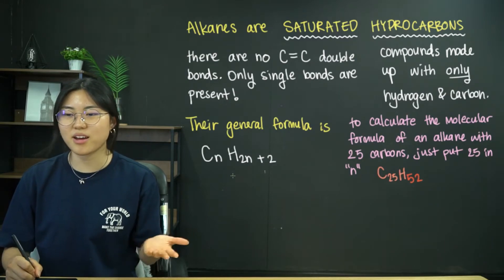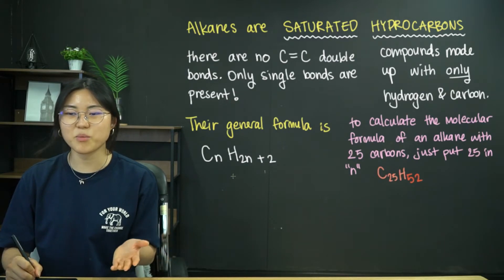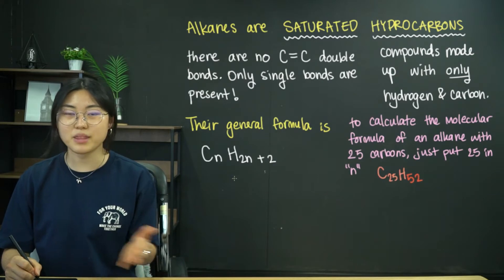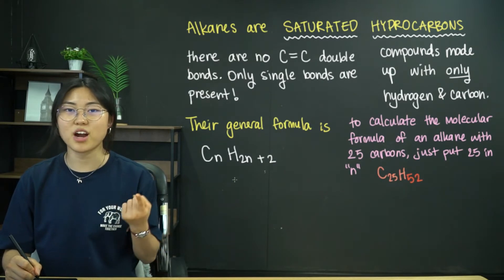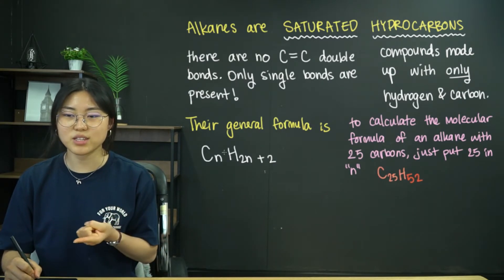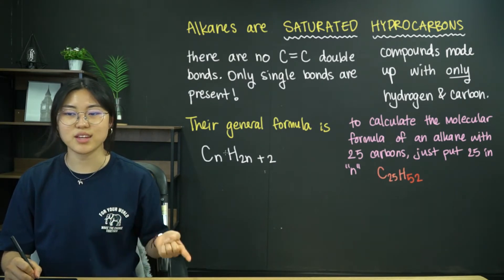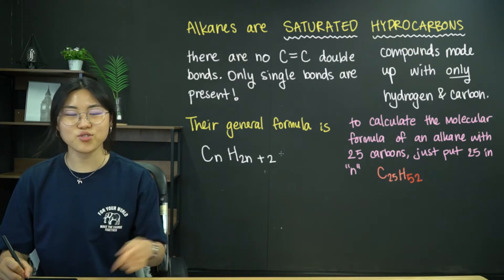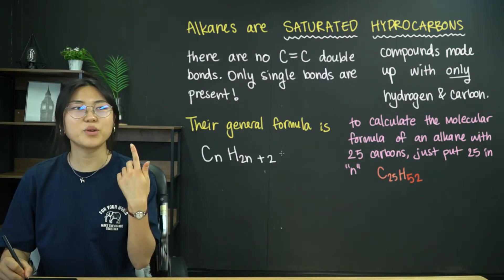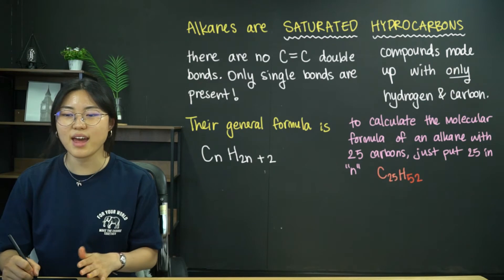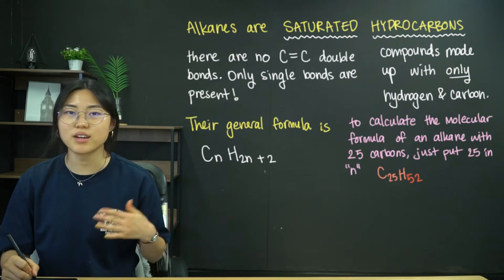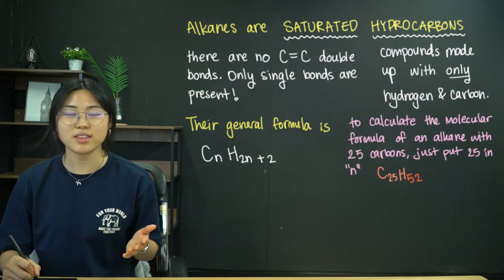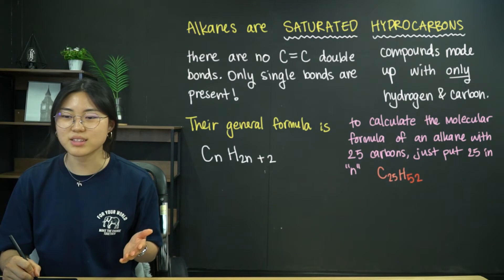Obviously something more simple — for example, if you have methane, methane only has one carbon. If you put one into N, you just get CH4. So let's try with different numbers of N and try drawing their structural or displayed formulas as well, just to check that you did the correct thing.